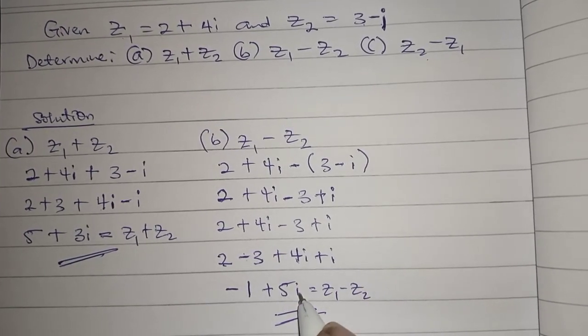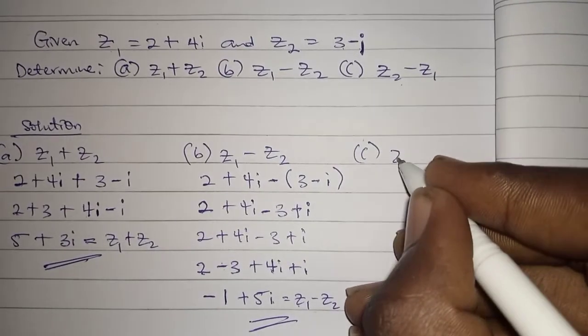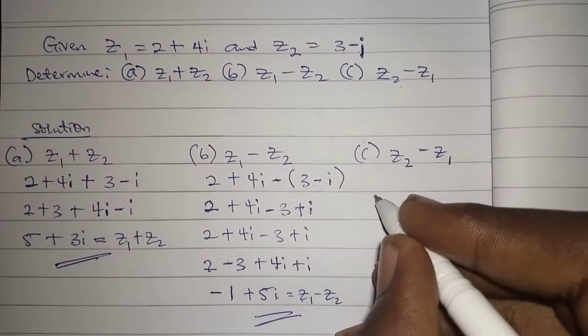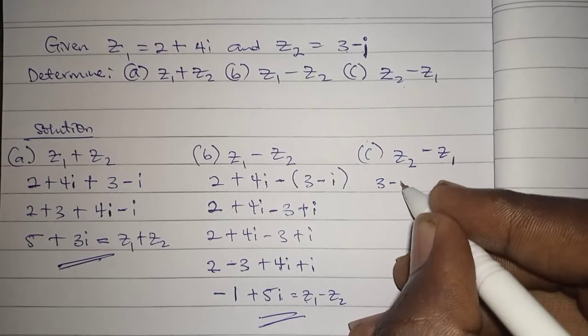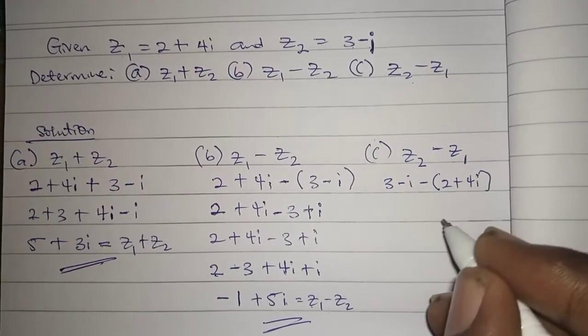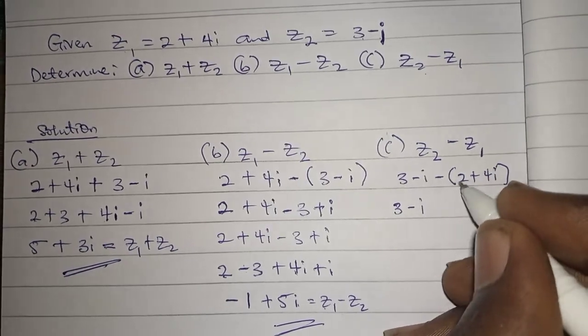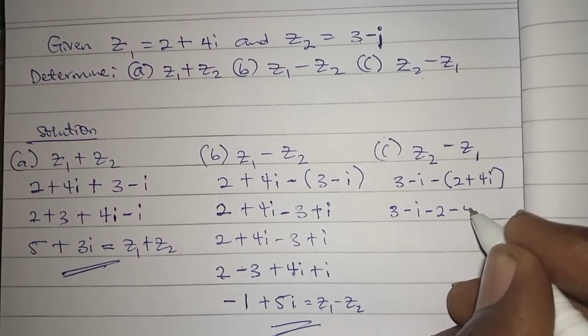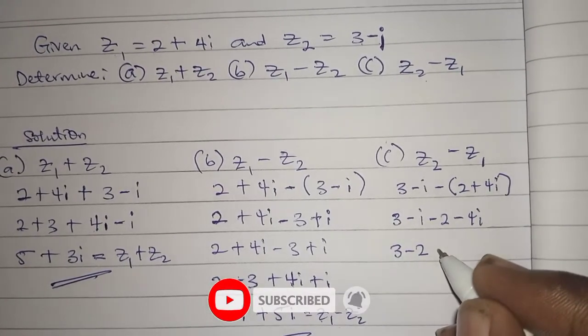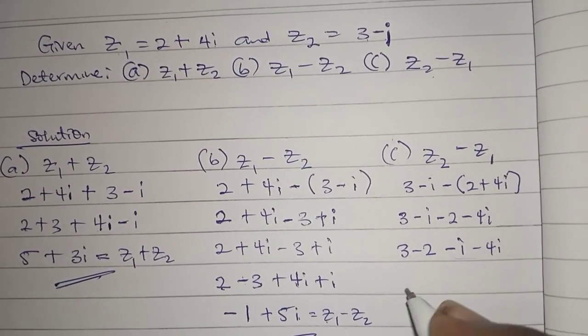Then the last one is z2 minus z1. z2 is 3 minus i minus z1 is 2 plus 4i. So opening the brackets we have 3 minus i, minus times this gives us minus 2, minus 4i.